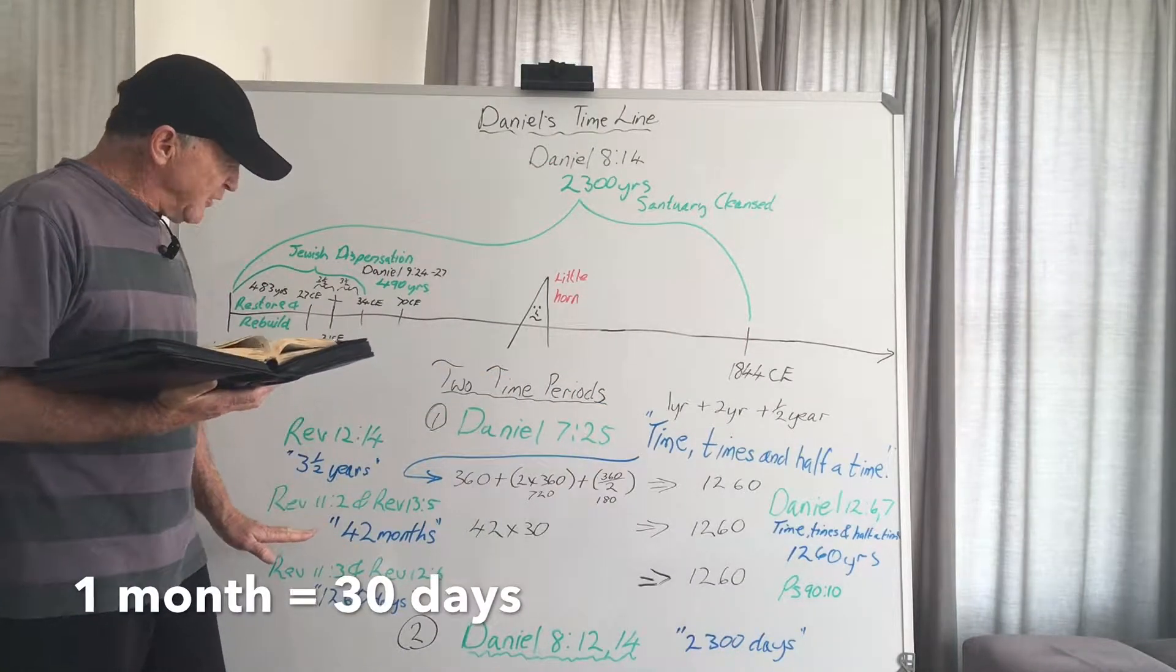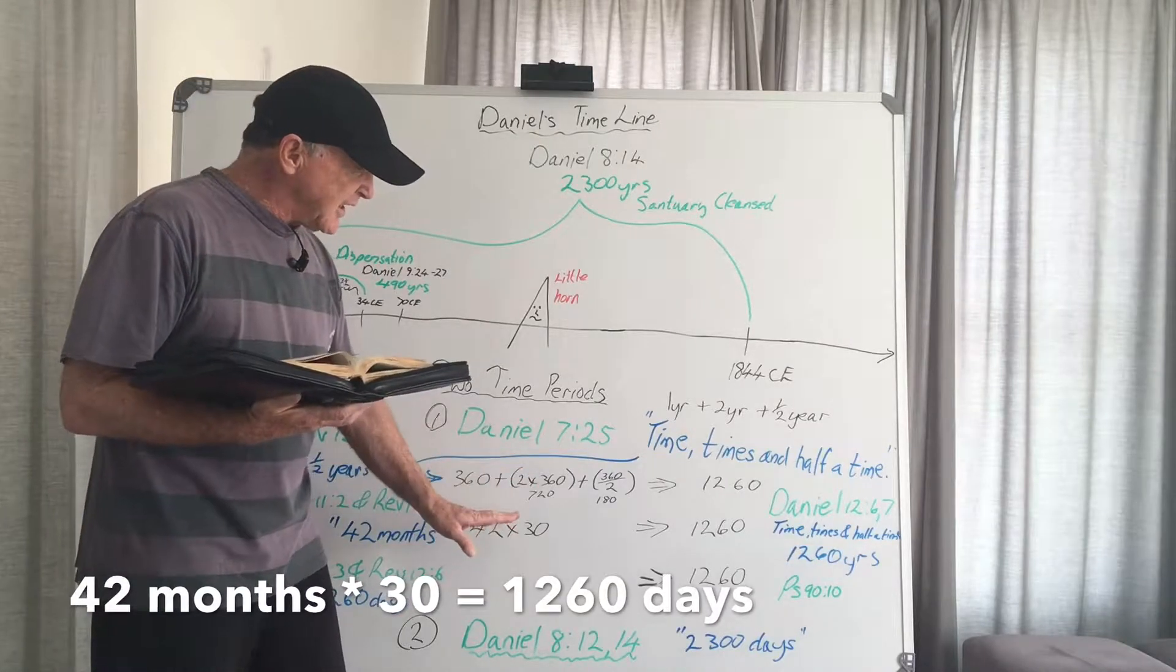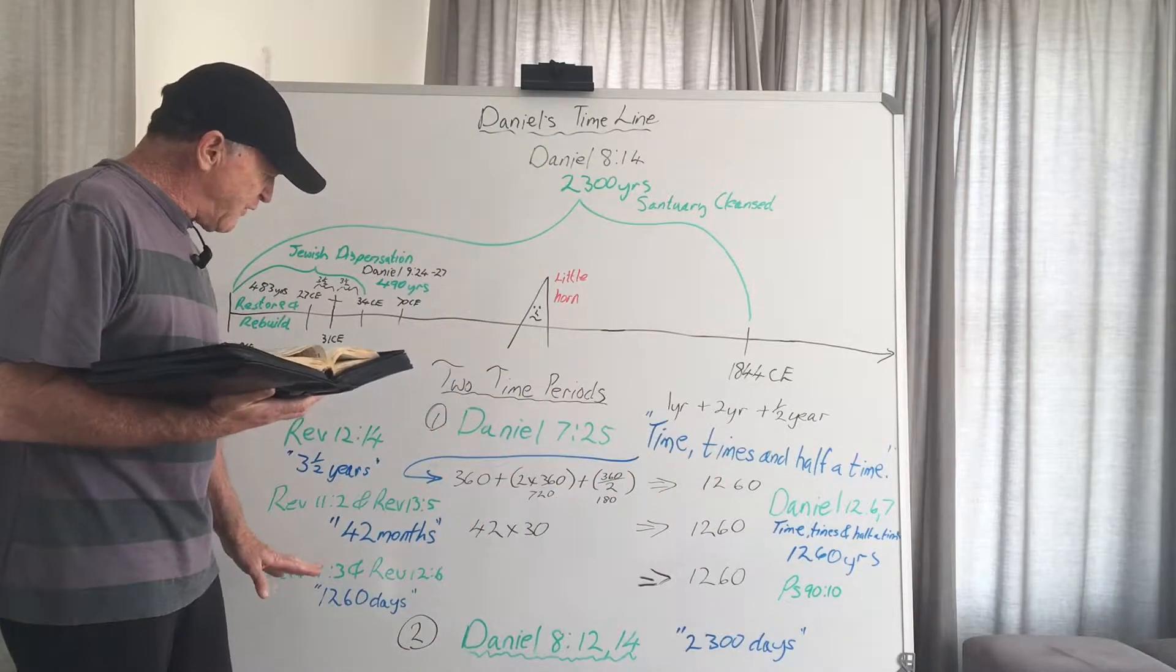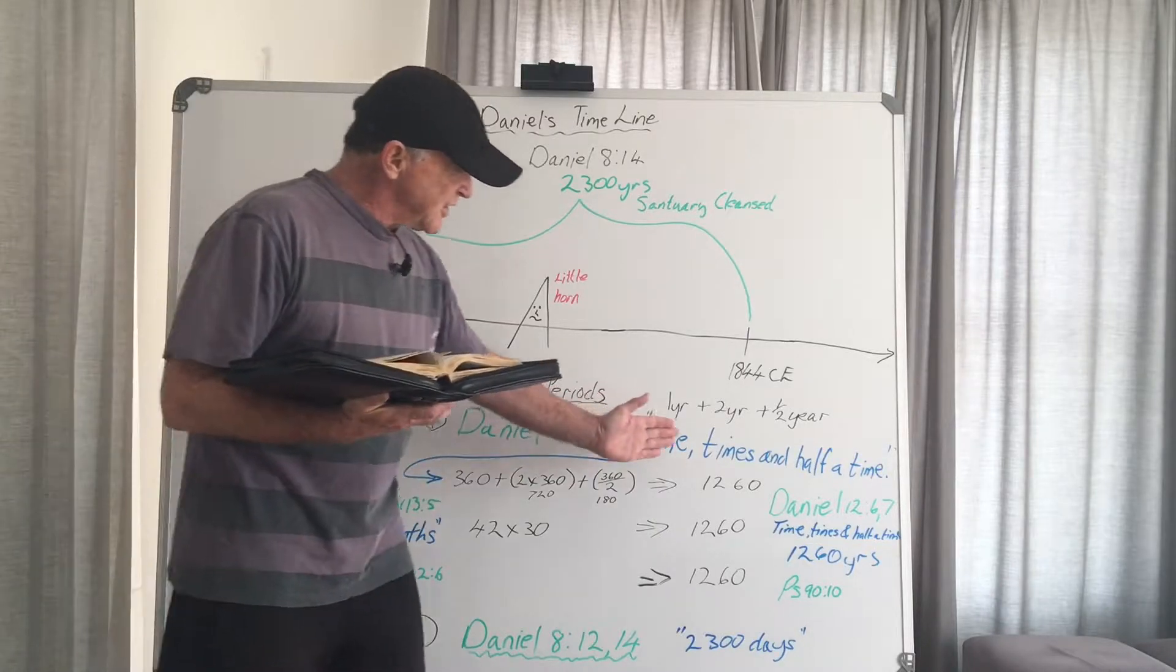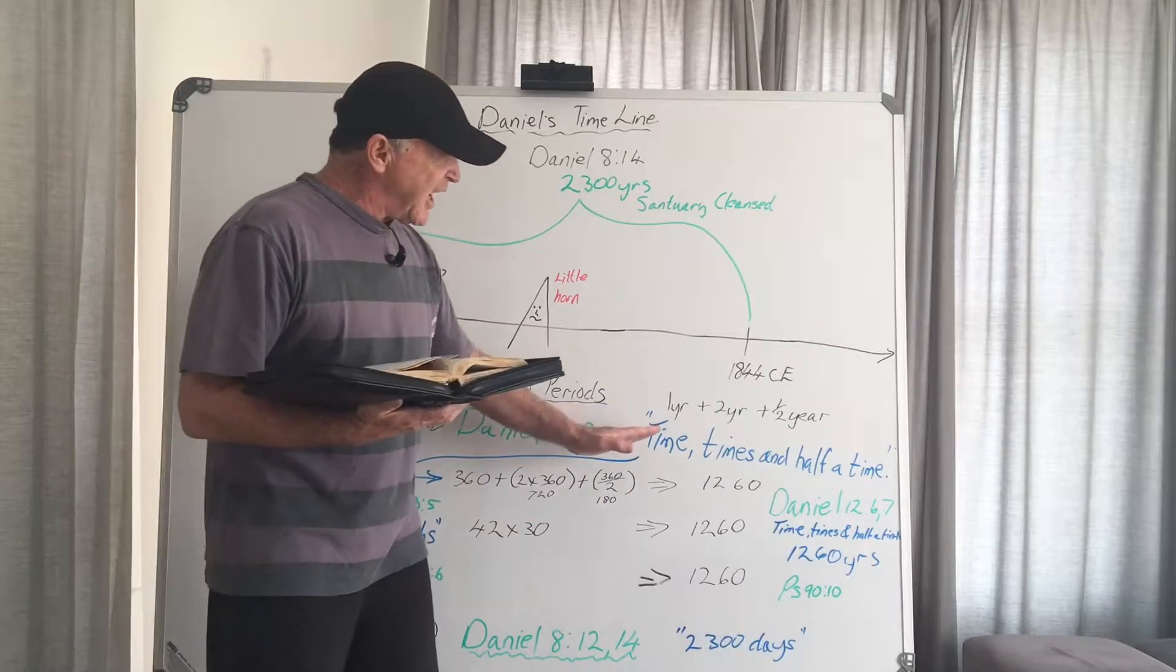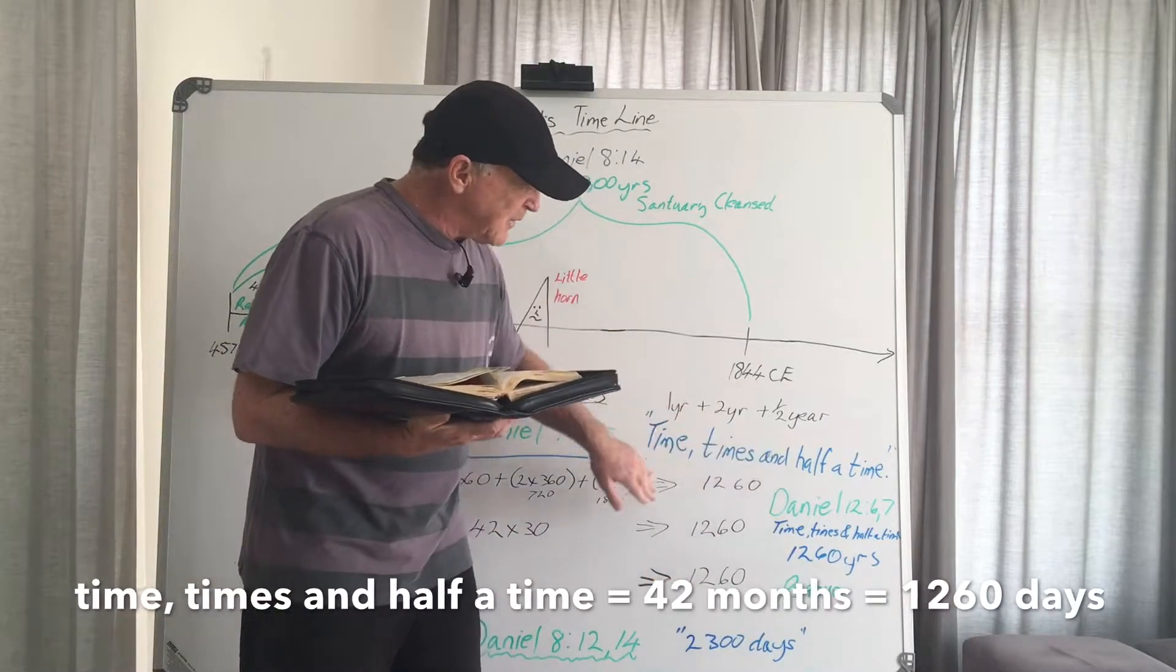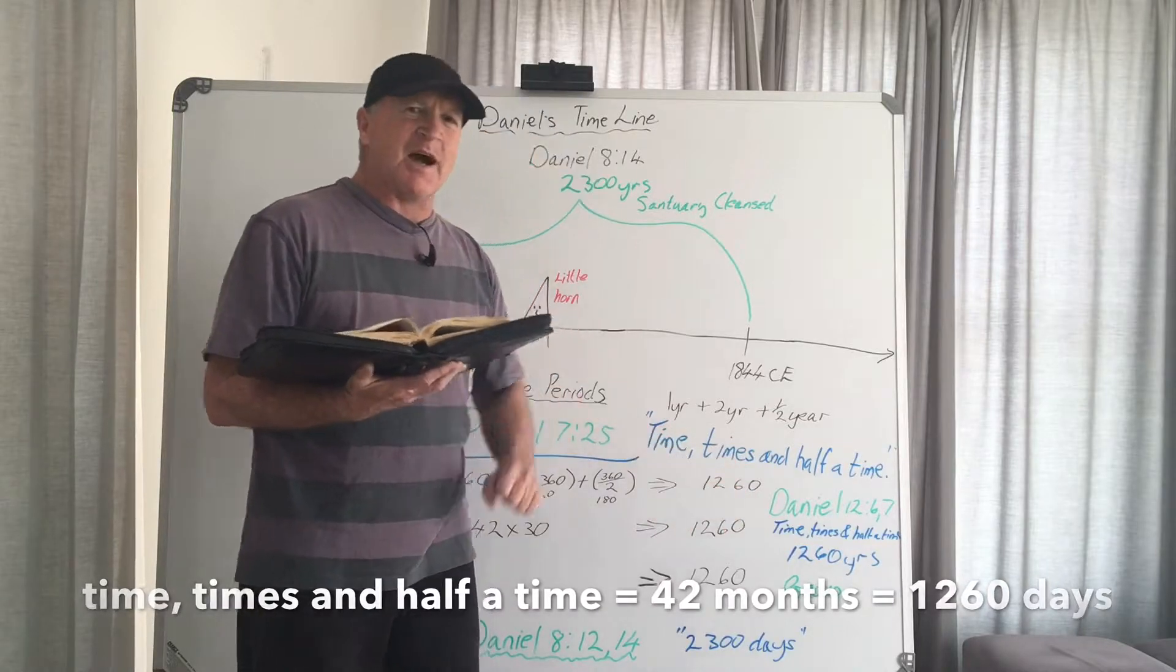Then we find we have got it recorded as 42 months. 42 months times 30 is 1,260 days. Then again of course we find it given to us clearly the 1,260 days, which is the same here. So we find that the time, times and a half a time, the 42 months, and of course the 1,260 days, what is common is that they all refer to exactly the same time period.